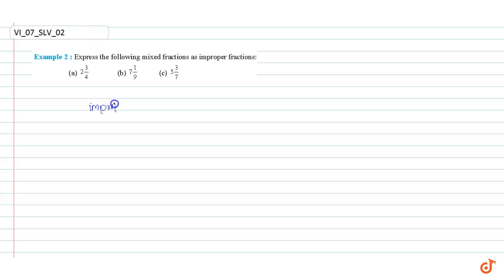Improper fraction equals (whole times denominator plus numerator) divided by denominator.